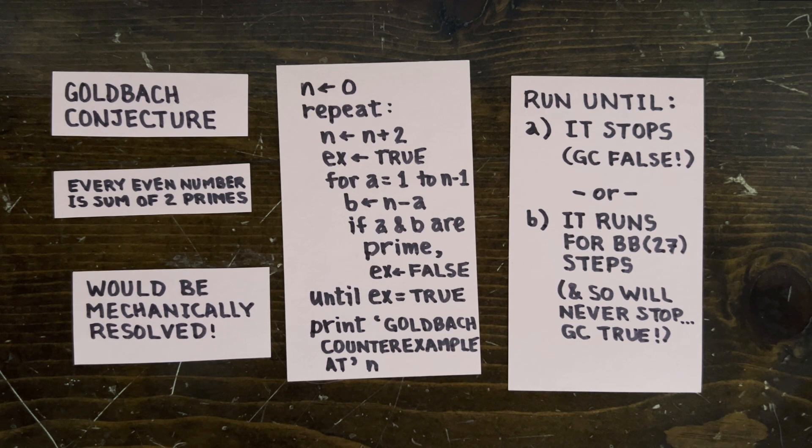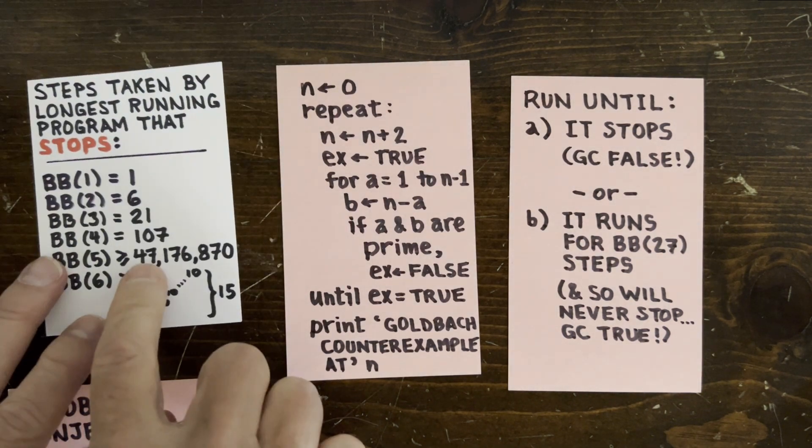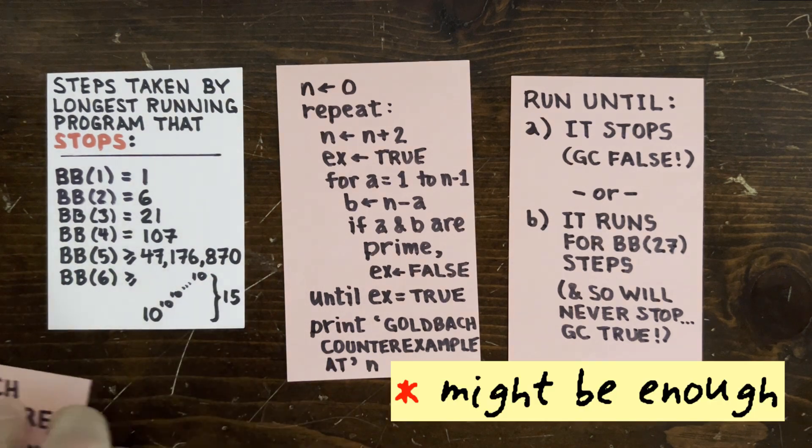And to me, that's kind of mind-blowing. So, if the Goldbach conjecture, for example, could be refuted by a five-state machine, then 47 million steps would be enough to resolve it, and that'd be awesome.